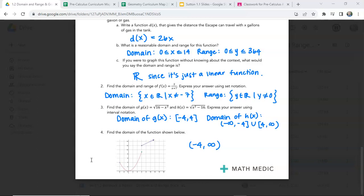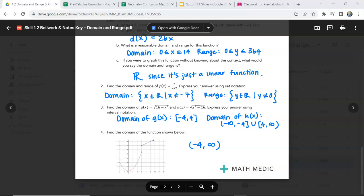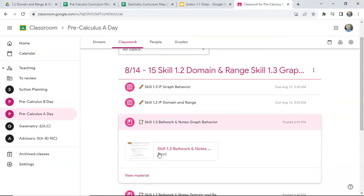And then we will go ahead and move on to the 1.3 assignment. So now you should be working on the 1.3 bell work and notes assignment. So pause the video, work on that with your group mates, and then we will continue. I will go over the 1.3 in just a moment. So go ahead and pause the video now.